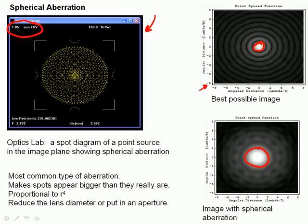If you look at the equations, spherical aberration is essentially proportional to r to the fourth power. So if your lens increases in size, spherical aberration increases dramatically with the diameter of the lens. The way you can reduce or minimize spherical aberration is to reduce the lens diameter or put in an aperture that acts as an effective way to reduce the diameter of the lens.